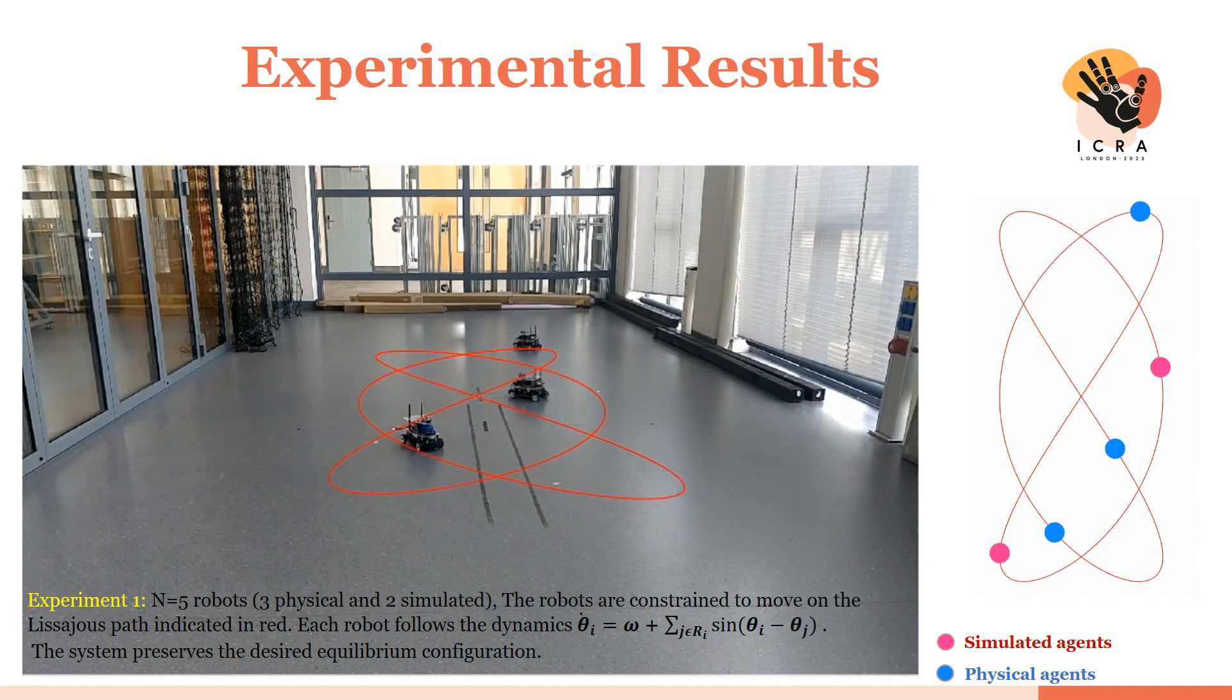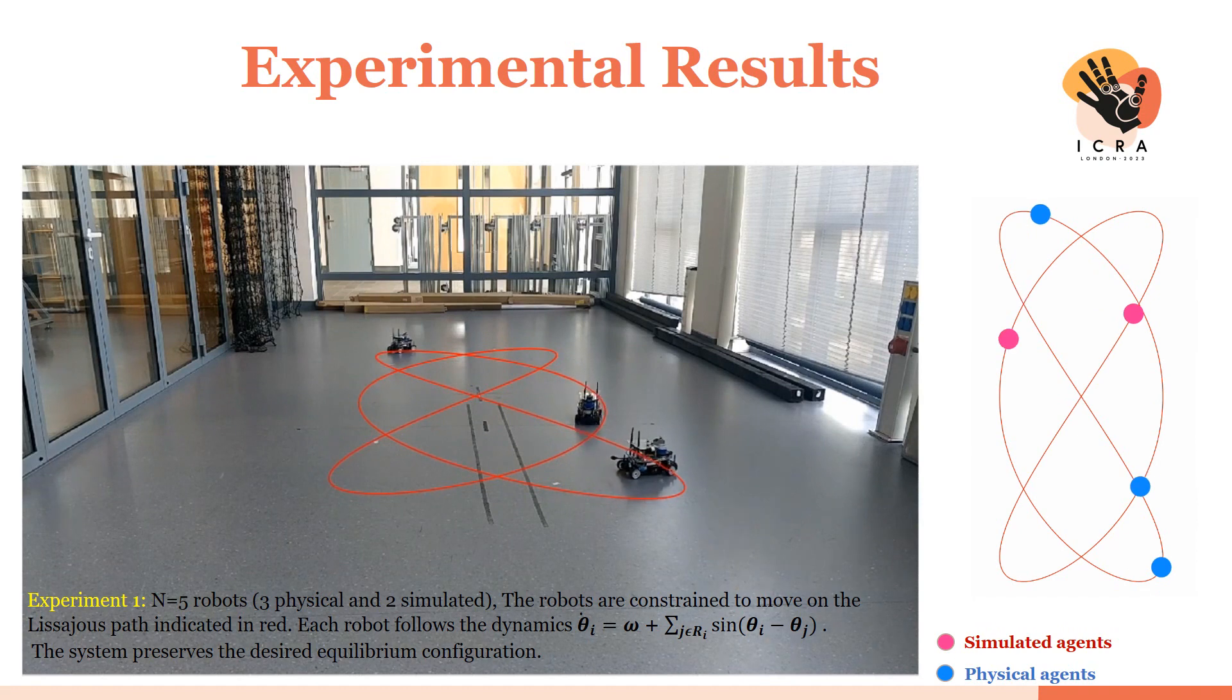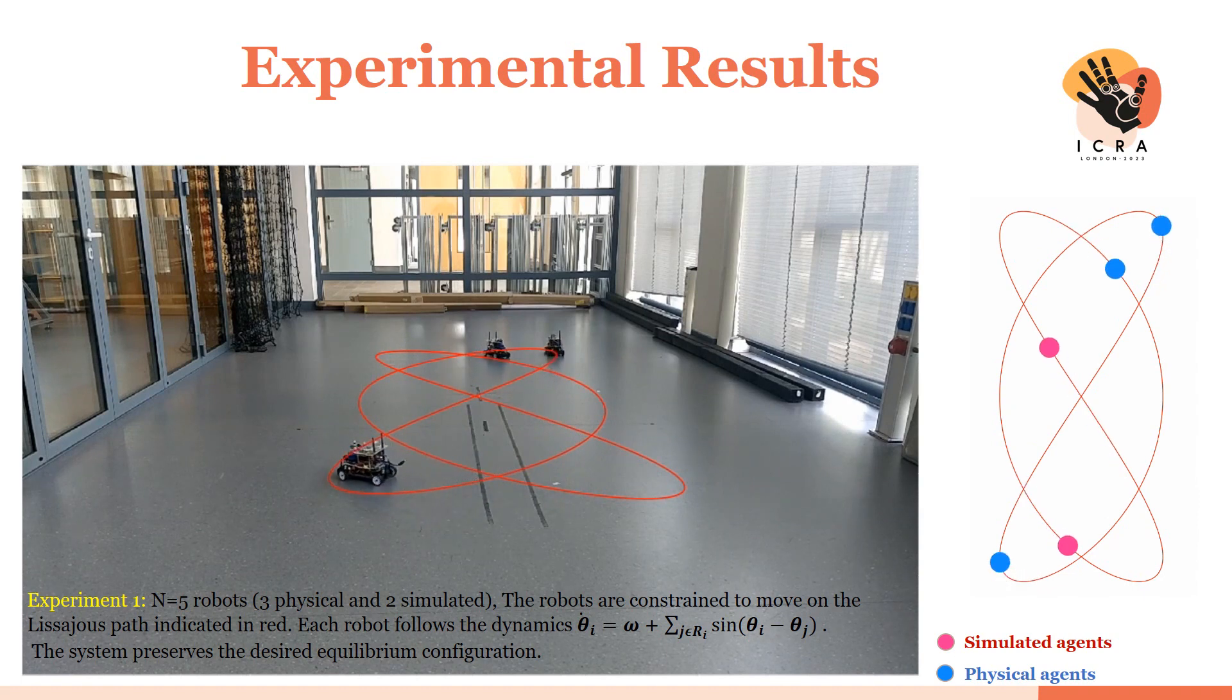The selected Lissajous curve is indicated in red and each robot follows the time-inverted Kuramoto dynamics. Despite tracking errors due to model mismatches in the MPCC constraints, the system preserves the desired equilibrium.